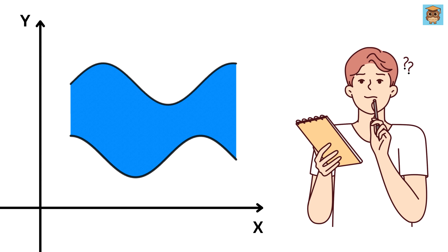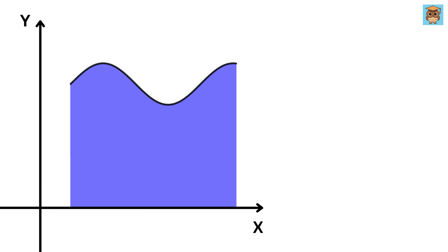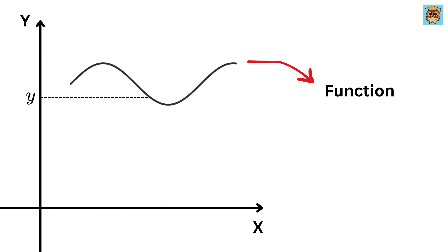Before we talk about the area between curves, let's first understand how we find the area under a single curve. Imagine you have a wavy line drawn on a graph. This curve represents a function, which means it gives a value for y when you plug in a value for x, and we denote it as f of x.